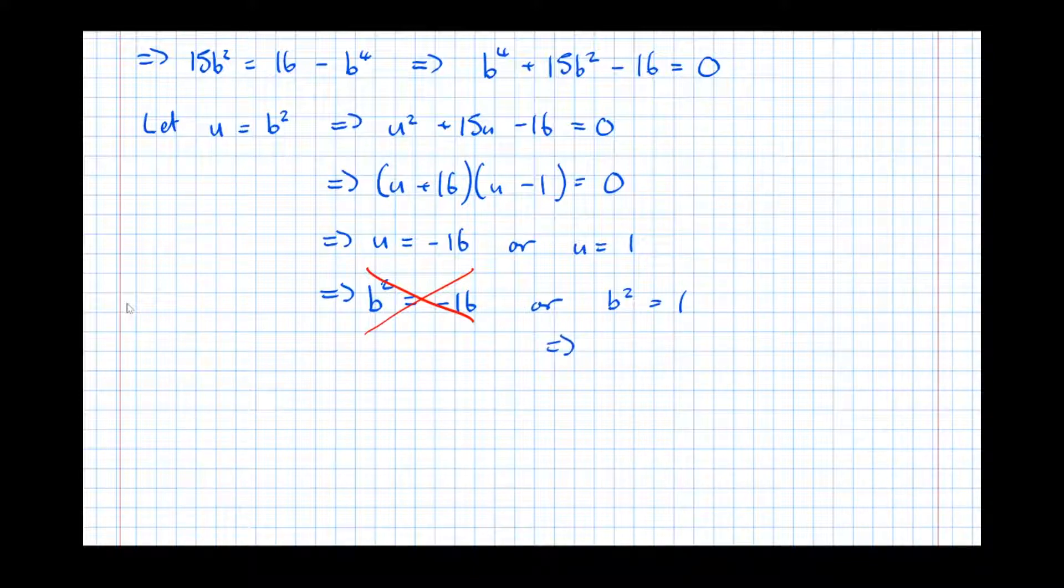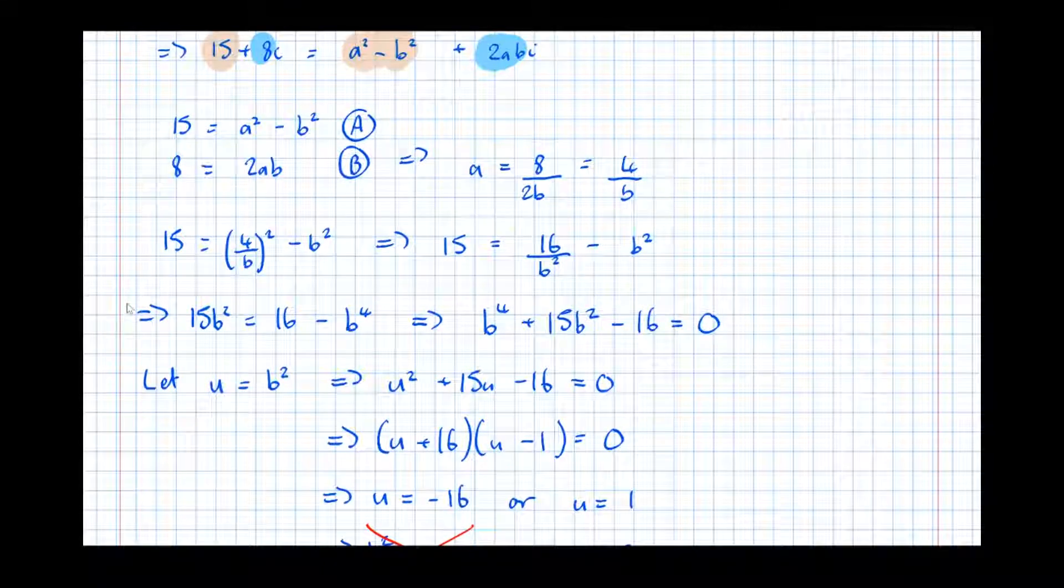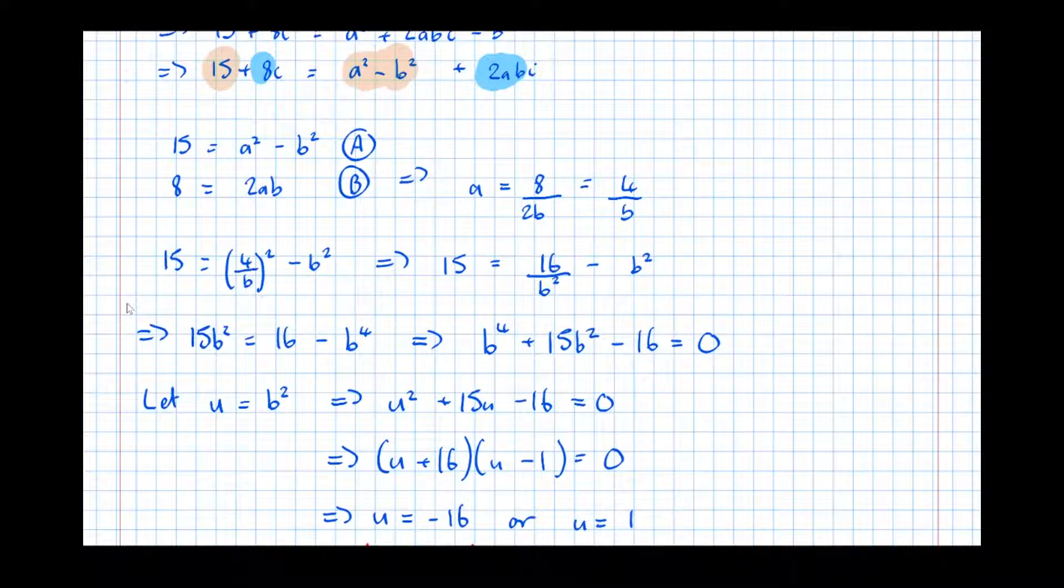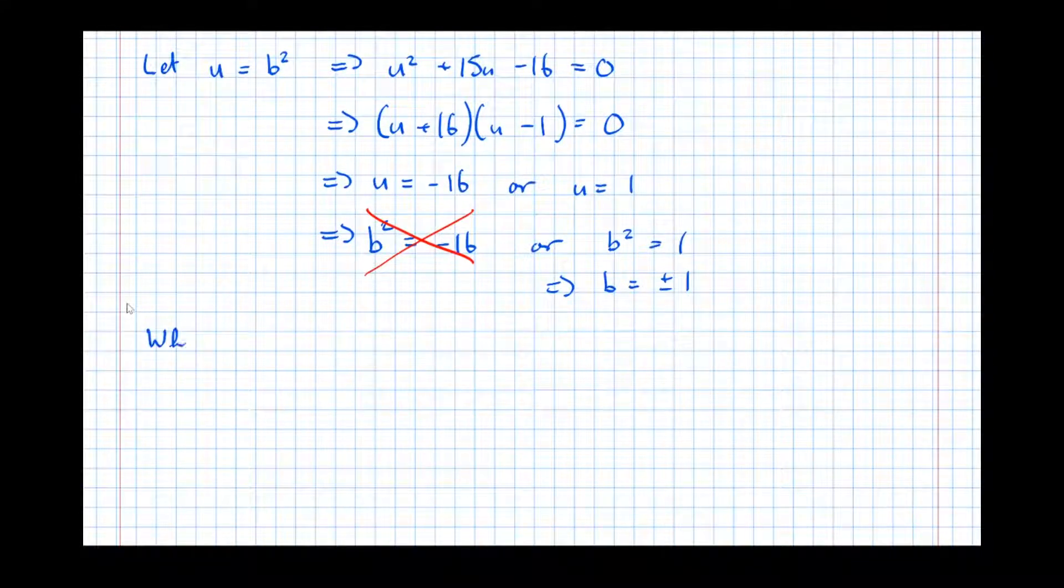So this one implies b equals plus or minus 1. So that's good. We've got b is plus or minus 1. So now let's find out what a equals. So we've got a formula for a here: a equals 4 over b. So when b equals 1, a equals 4 over 1, which is 4. If b equals minus 1, a equals 4 over minus 1 equals minus 4.